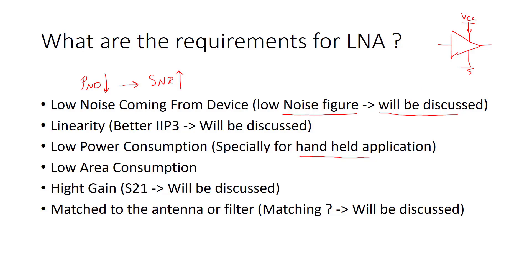Low area consumption. Of course, we want to have a small chip. That's for everything. We always want to have it small. So it takes less area. High gain, which means S21. We will talk about the scattering parameters later. So we want our LNA to have a high gain, of course. But sometimes we don't need high gain.